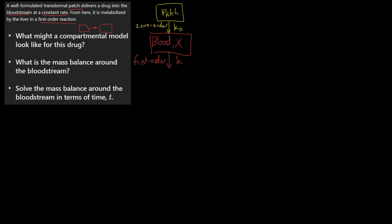That's what a compartmental model looks like for this drug. What is the mass balance around the bloodstream? Mass balance is just when you talk about the rate of the mass change. So it would be the rate of the mass change, so we can represent that as dX/dt, which is the change in X, the bloodstream, with respect to the change in time.